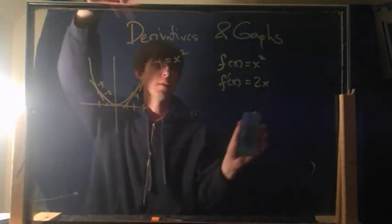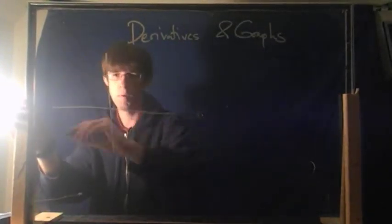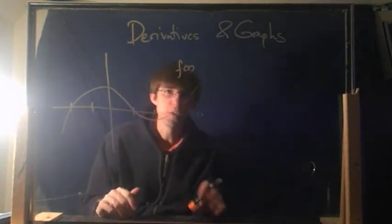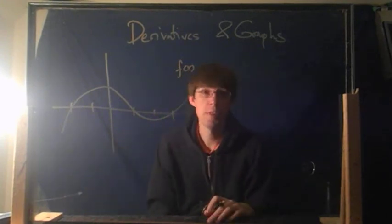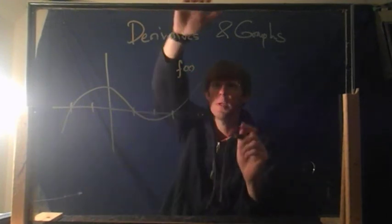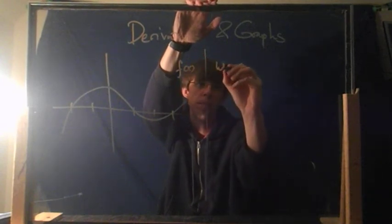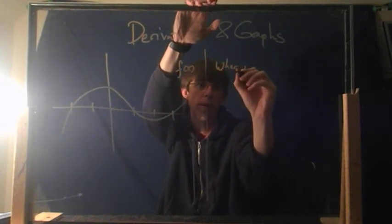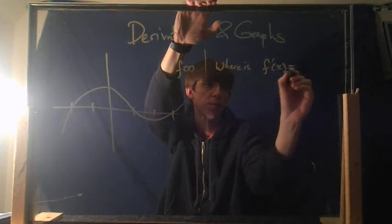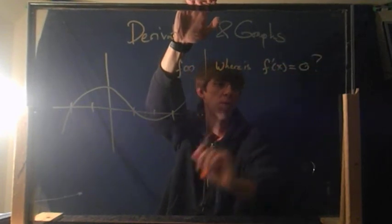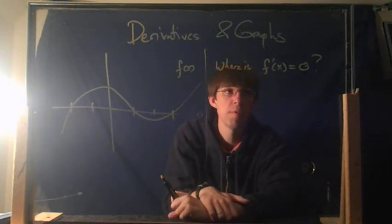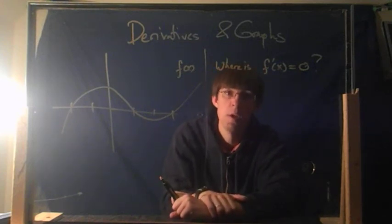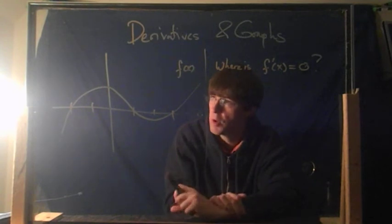Let's look at something a little more complicated. Here's a function f(x) — I'm not going to give you an equation for this, it's just some curve that I drew. You can still answer some questions about the derivative. Here's a question: where is f prime of x equal to 0? I would like to know where are the x values when the derivative is 0. The derivative is the same as the slope, so I'm asking: where is the slope 0 for this graph?